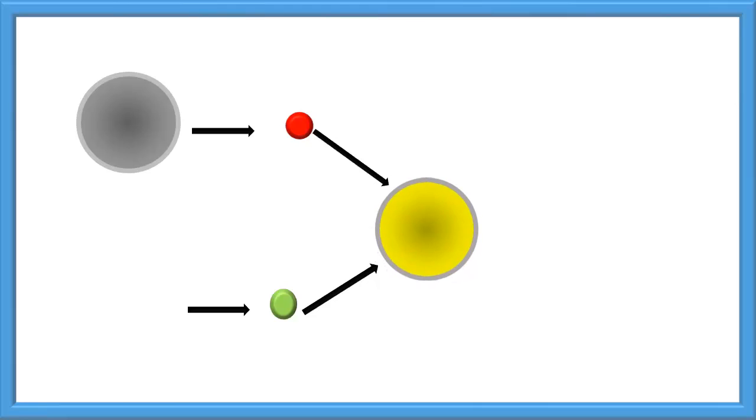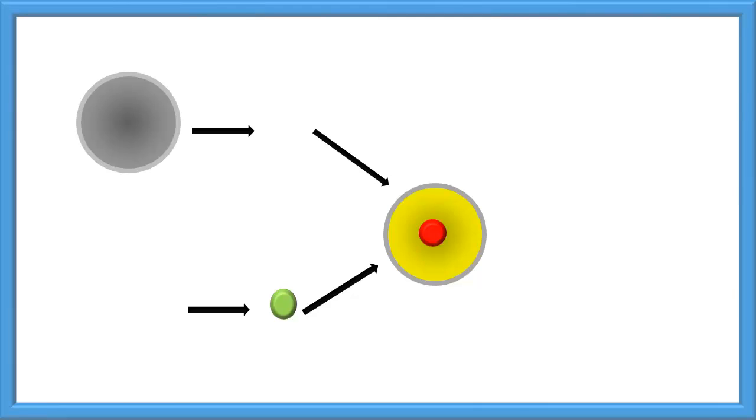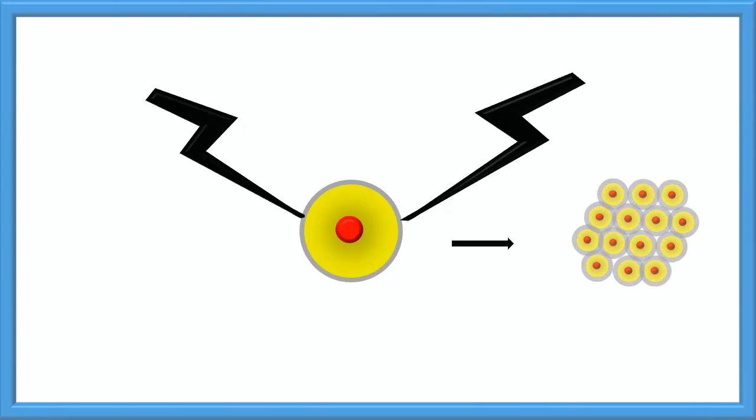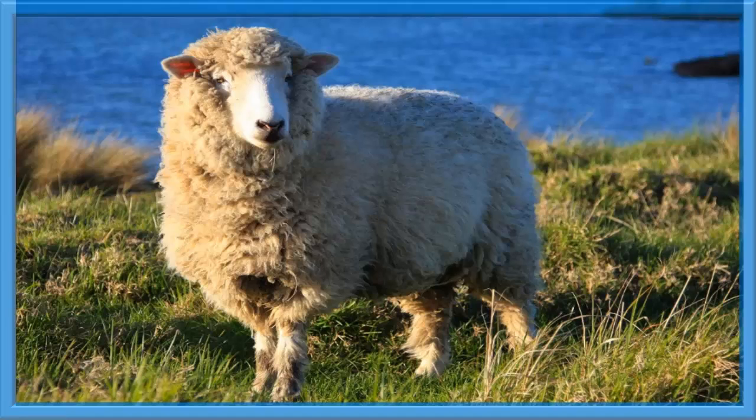4. The new nucleus gets reprogrammed as if it were an egg cell. 5. The egg cell is stimulated with an electric shock. 6. The egg cell starts to divide. 7. The result is the cloned animal comes out to be genetically identical to the original cell.